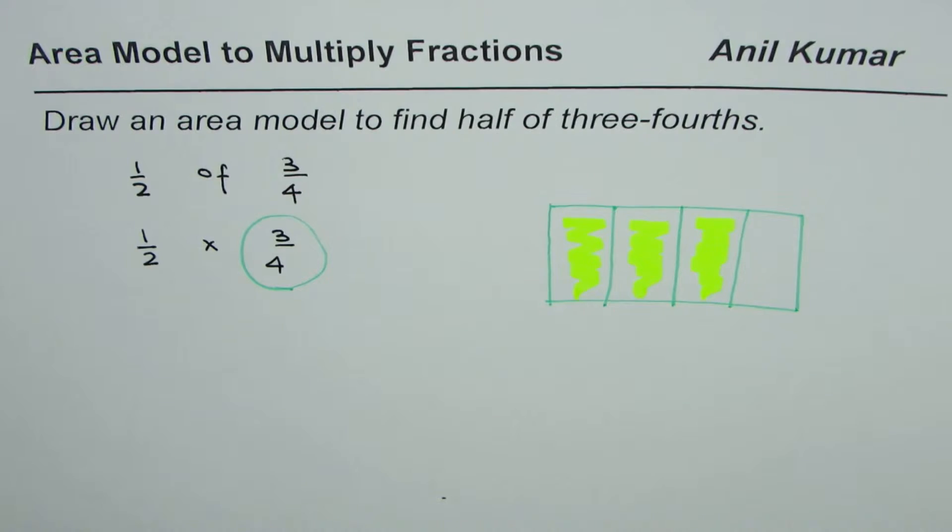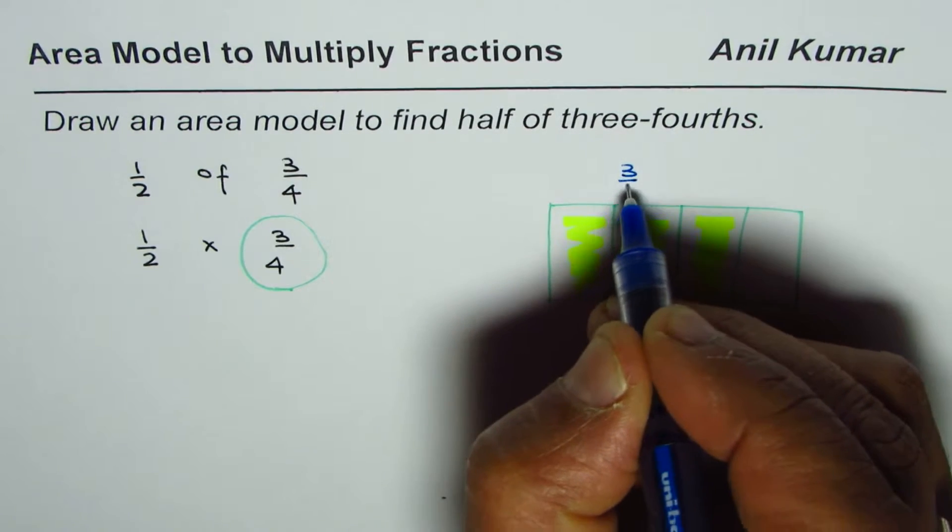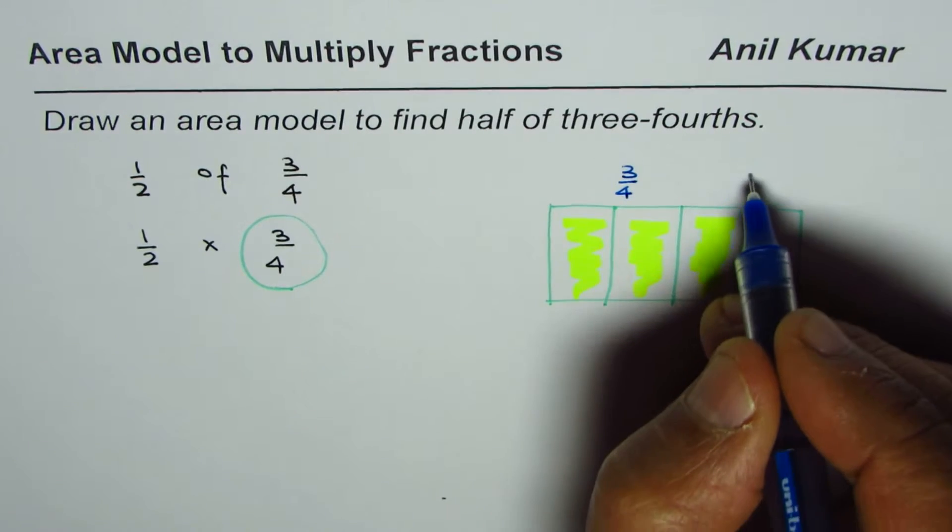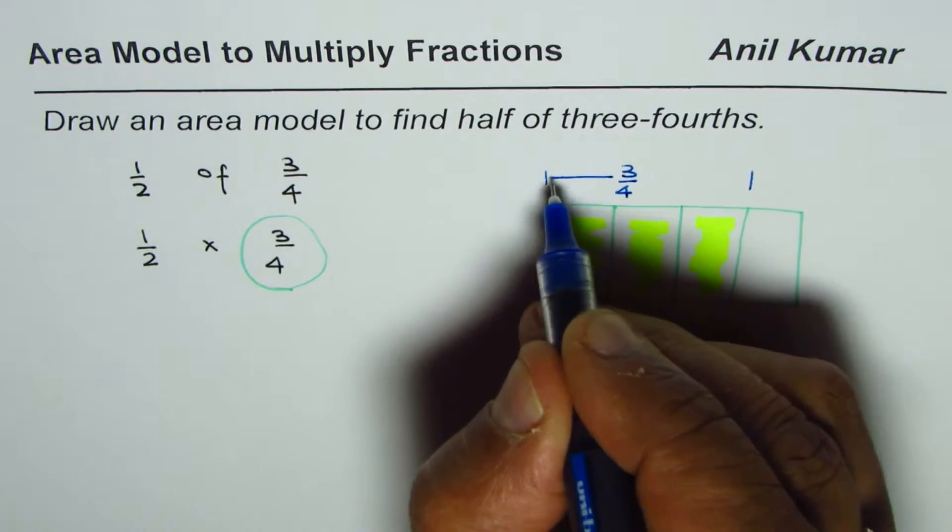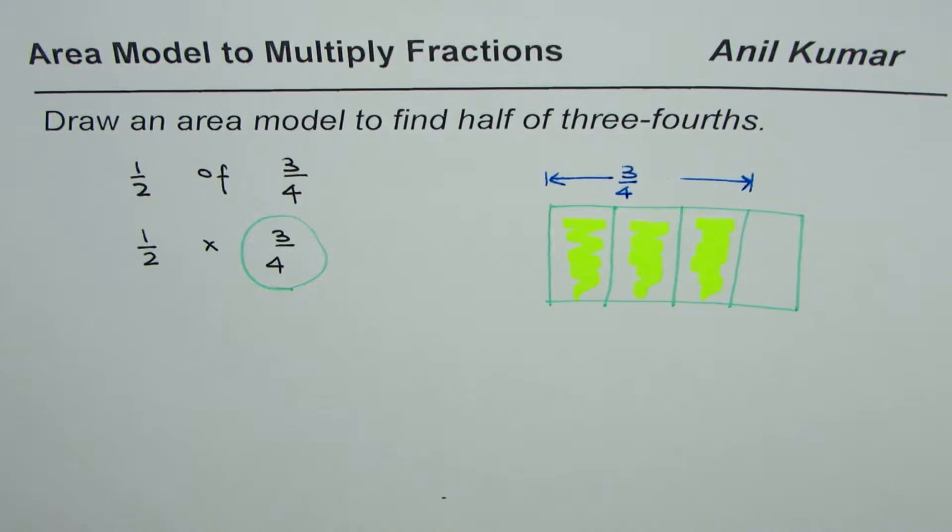Now that part which we have done here is three-fourths. From here to here. So we have selected three out of four columns. Now let's do half of it.